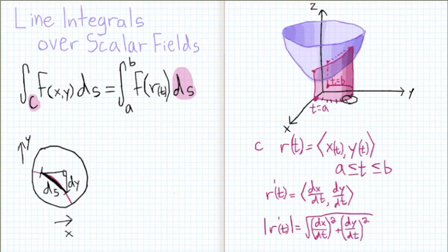This line segment has a very small increase in y and a very small increase in x as well. So we can think of it like the hypotenuse of a triangle, where the sides are dy and dx. So from the Pythagorean theorem, ds will be the square root of dx squared plus dy squared.